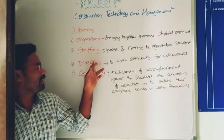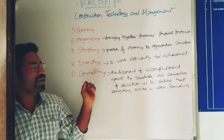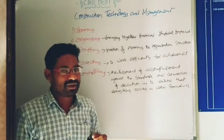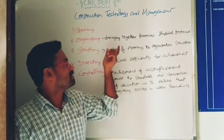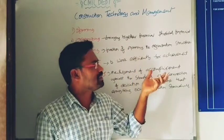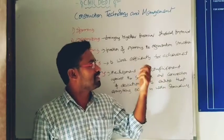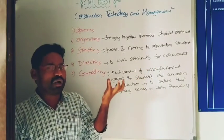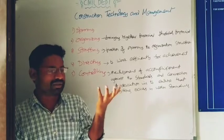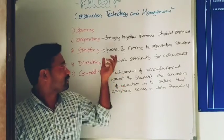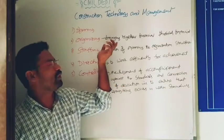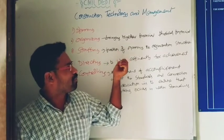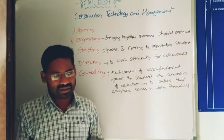Coming to organizing: organizing is bringing together financial and physical resources in a unified manner. That is one of the key qualities of project management. The staffing function involves managing the people within the organizational structure.